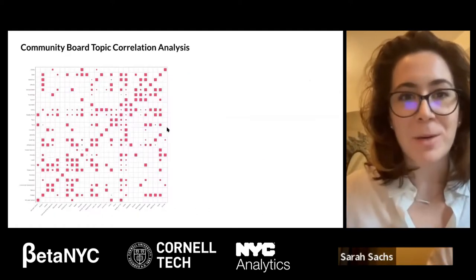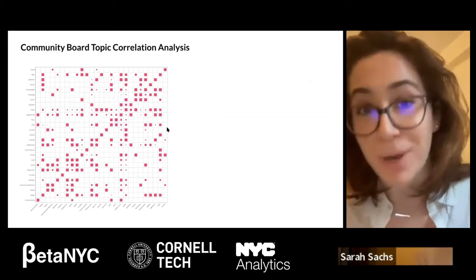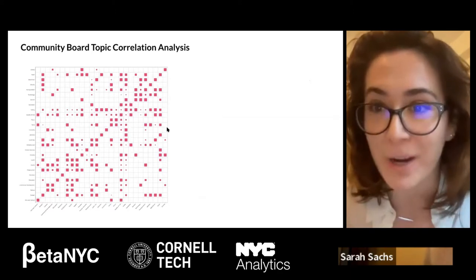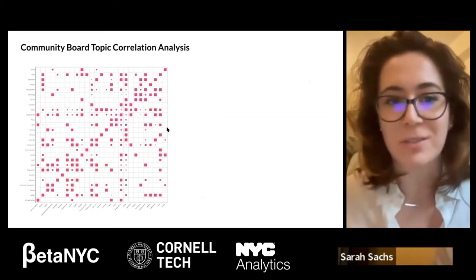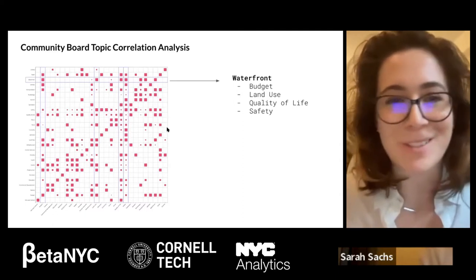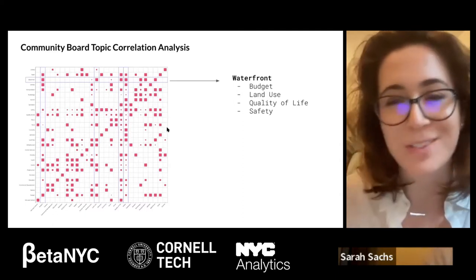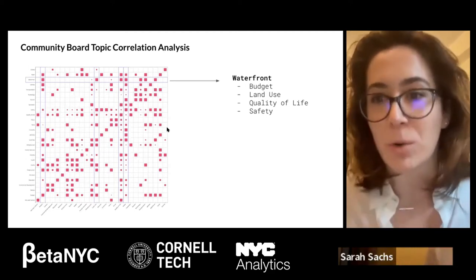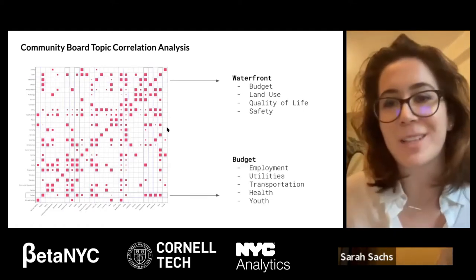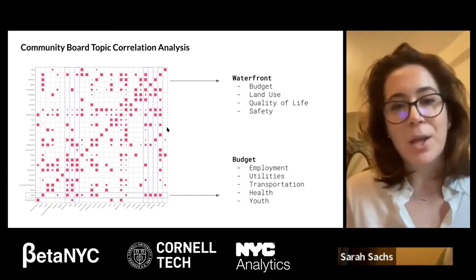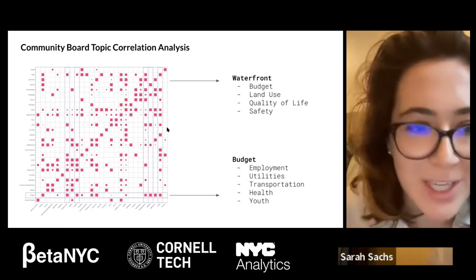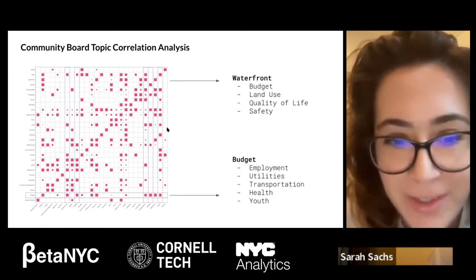Thinking about this taxonomy across all the meetings over the last six months, we can now gather trends of topics being discussed and how they correlate or happen in tandem with each other. The bigger the square in this visualization means the topic happens in tandem with another topic more often. For example, anytime a meeting talks about waterfront, there was correlation with budget and land use, quality of life and safety. Budget can also relate to all these other types of topics, and education relates to different aspects around health, safety, and transportation.